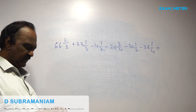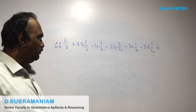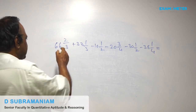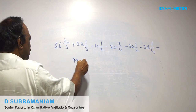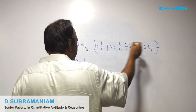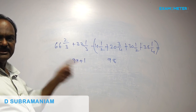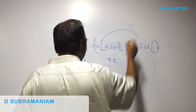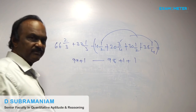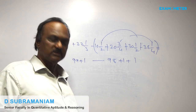Next: 66 and 2 by 3, plus 33 and 1 by 3, minus 10 and a half, minus 23 by 4, minus 30 and a half, minus 38 and 1 by 4. Shortcut: 66 plus 33 is 99; 2 by 3 plus 1 by 3 is 1, so total positive is 100. The negative whole numbers: 10 plus 20 plus 30 plus 38 is 98; half plus half is 1, 3 by 4 plus 1 by 4 is 1, so total negative is 100. 100 minus 100 equals 0. Answer is 0.